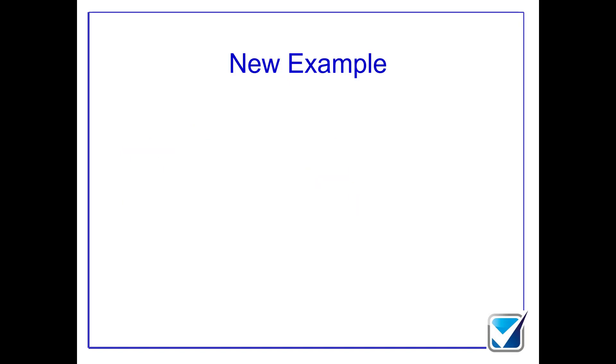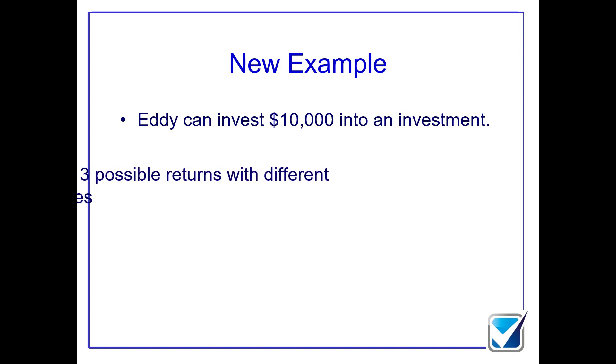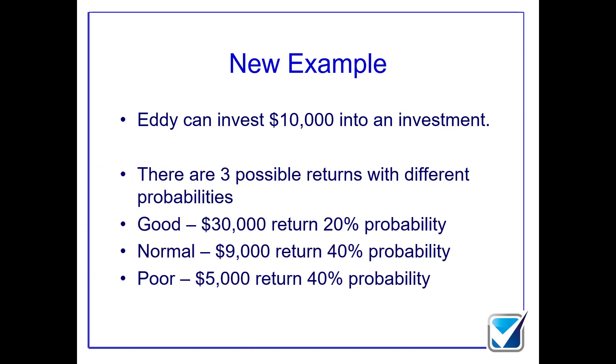The other issues with expected value come about because of the skew of the percentage chances and potential returns. We've got the potential to invest $10,000 into an investment, same as before. We have good, normal, and poor returns, but now the figures and percentage chances are slightly different. You have a 20% chance of a good return, 40% normal, and 40% poor return. The normal return gives me $9,000, the poor return gives me $5,000.